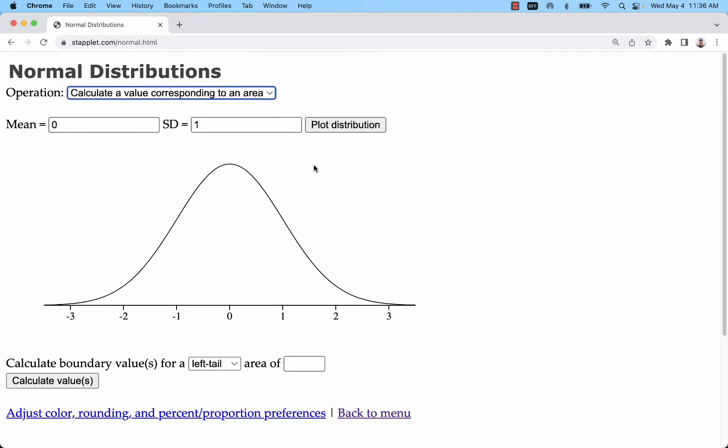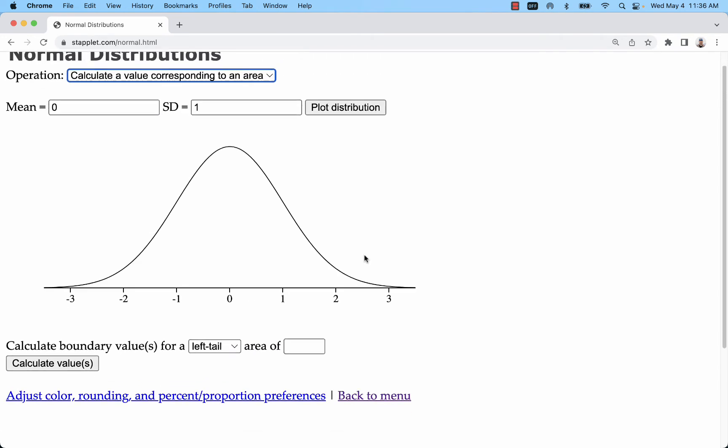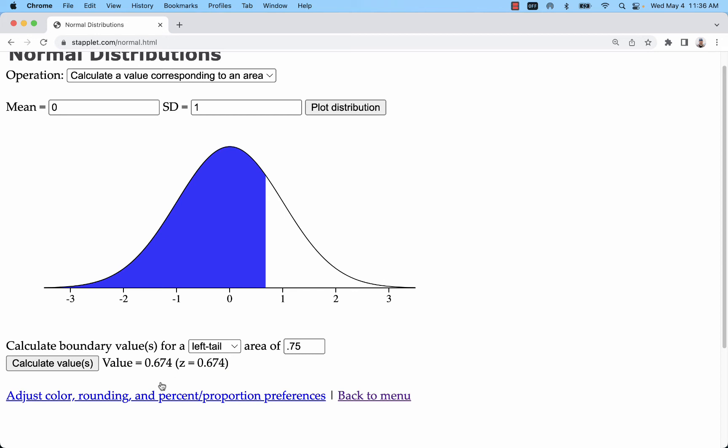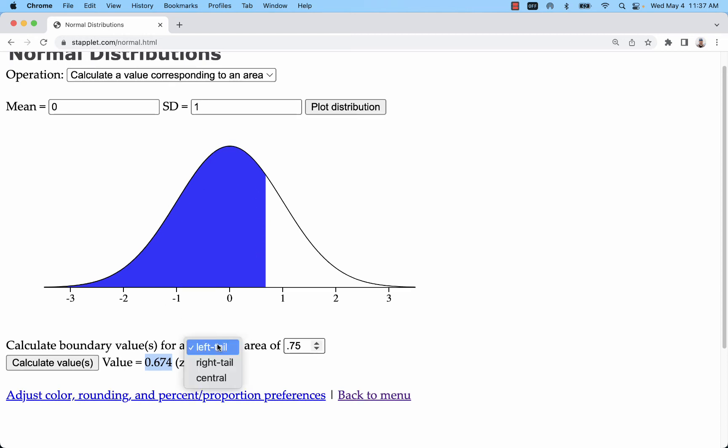Now the other way to use it is to go backwards. For example, if I have a left tail or a left area of 0.75, that would be like the 75th percentile. I'm saying that's 0.674 standard deviations to the right of the mean to have that area to the left.